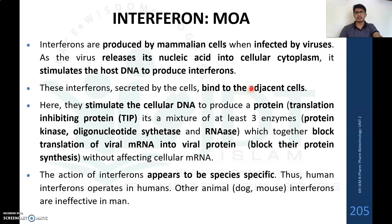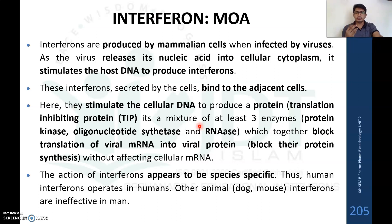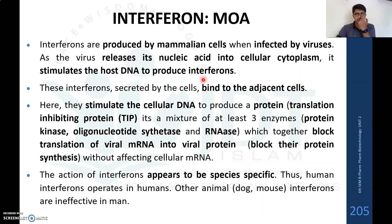The interferons secreted by virus-infected cells will bind with adjacent cells and stimulate the cellular DNA to produce a translation inhibiting protein. This is a mixture of at least three enzymes: protein kinase, oligonucleotide synthetase, and RNase. Together, these block the translation of mRNA into viral proteins, blocking viral protein synthesis without affecting the host cell's own mRNA.